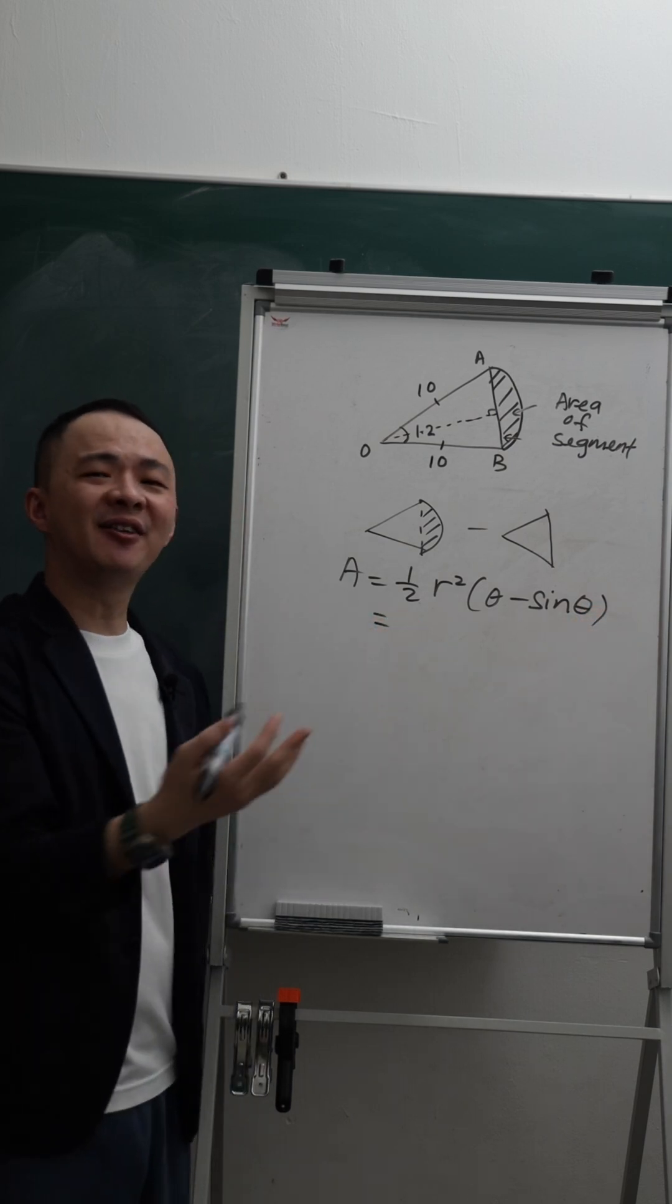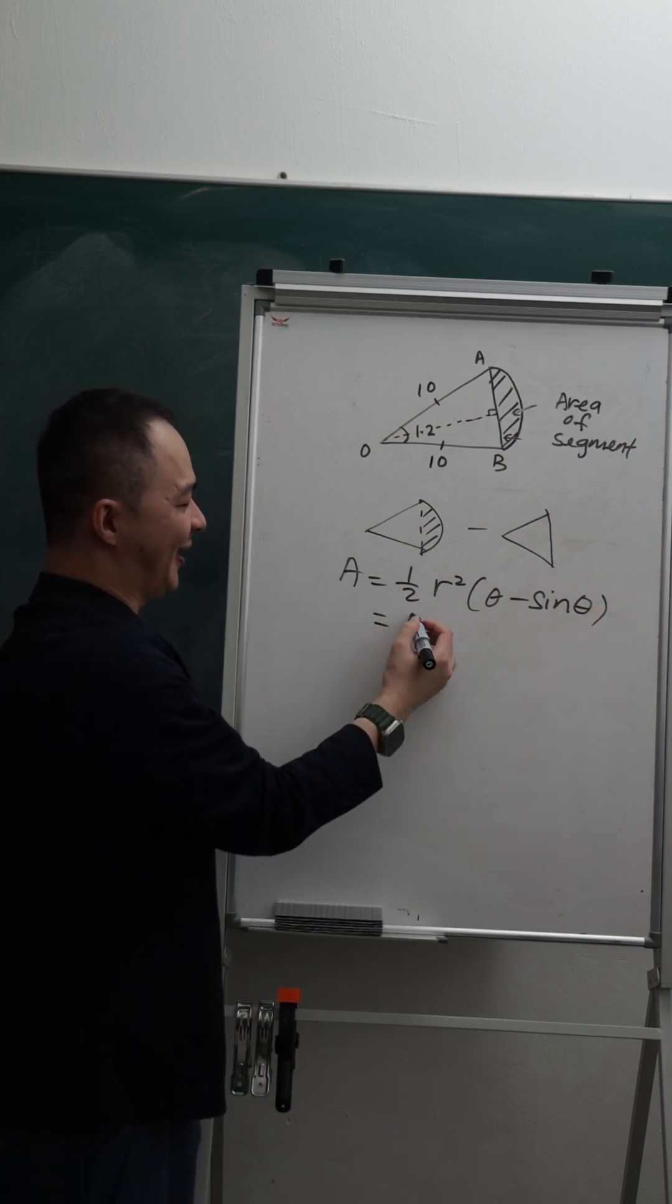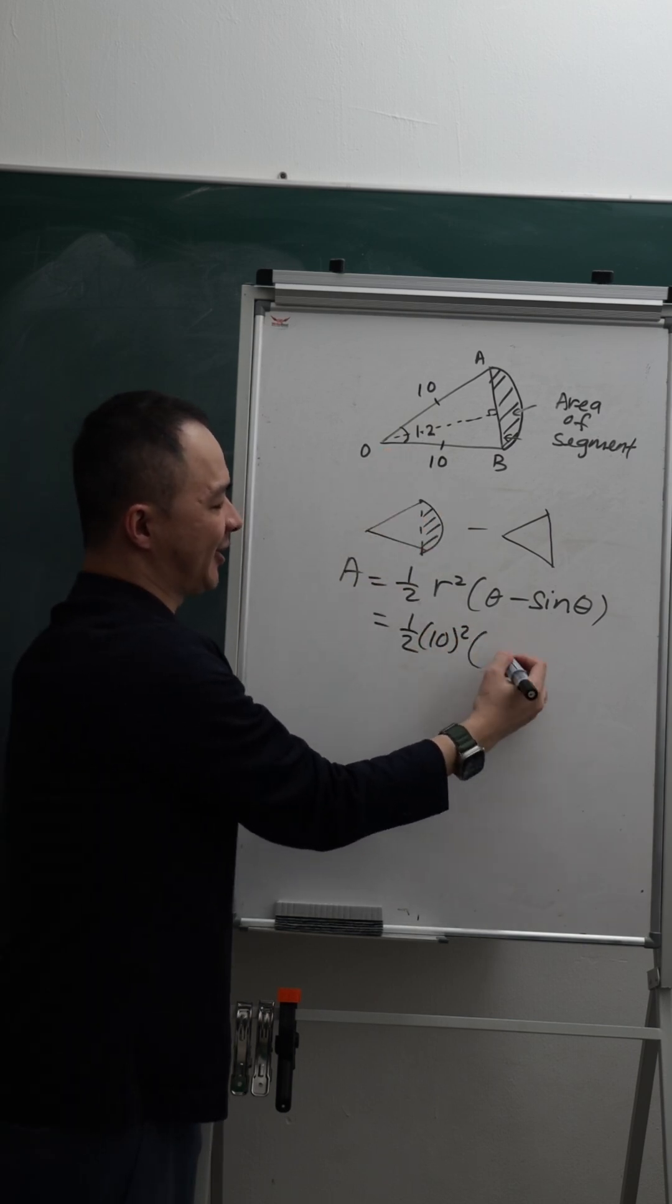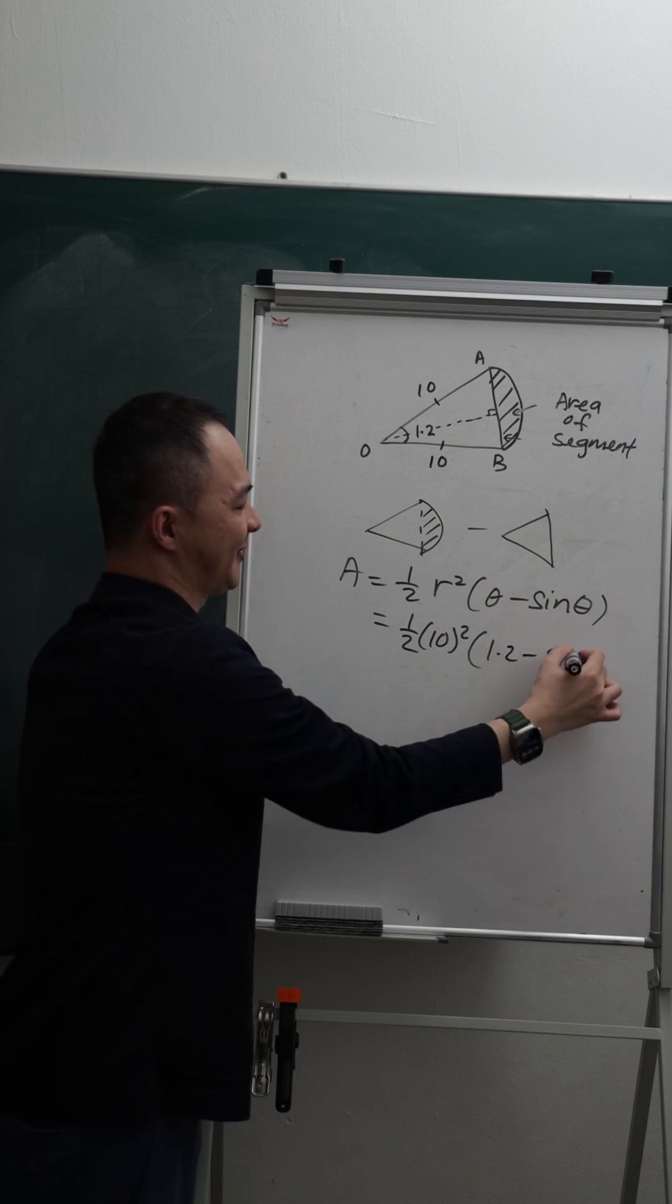So if I just apply the formula, I can easily get the answer. One over two, my radius is 10 squared, my theta is 1.2 minus sine 1.2.